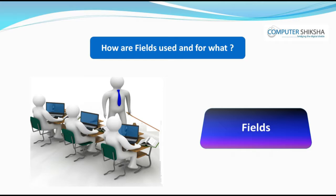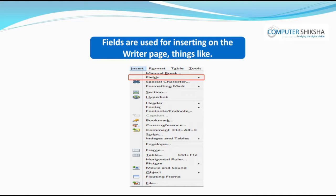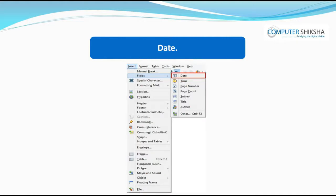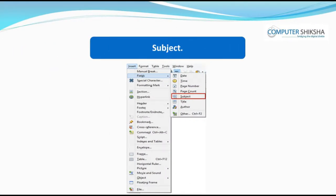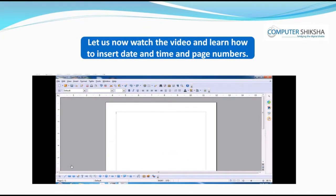How are fields used and for what? Fields are used for inserting on the writer page things like date, time, page number, page count, subject, author name, etc. If, while inserting date and time, one finds that date and time are appearing fixed, then one needs to go to View and click on the fields name. Let us now watch the video and learn how to insert date and time and page numbers.